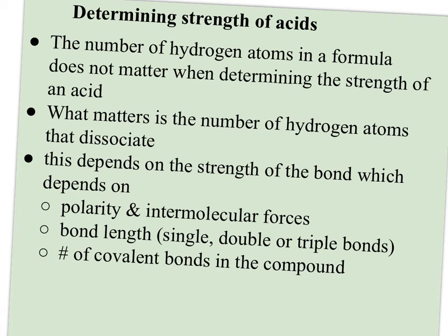The difference between strong and weak is how much it dissociates or ionizes. The number of hydrogen atoms in a formula doesn't tell you — it's something else that determines acid strength. What matters is the number of hydrogen atoms that actually dissociate or get pulled off, and remember, it's water that's doing the separating.